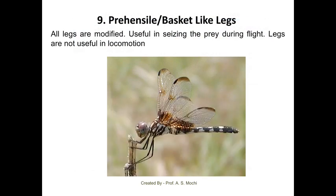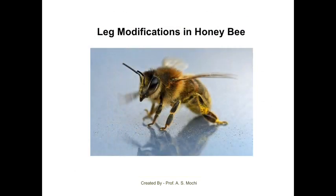The next is the prehensile type of legs, also called basket type of legs, found in case of adult dragonfly. All legs are modified as basket type legs, useful in seizing the prey during flight. The legs are not useful for locomotion. In dragonfly, all three pairs of legs are not used for locomotion — they are only used to catch prey during flight.